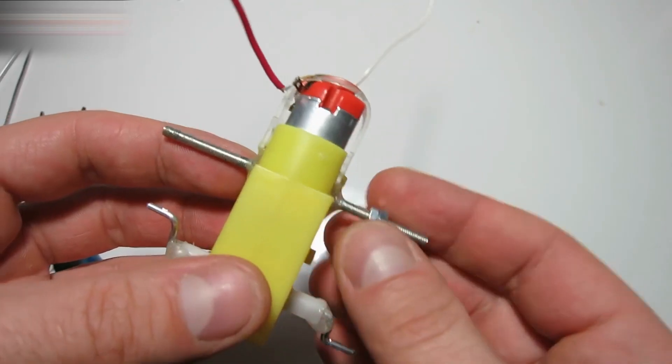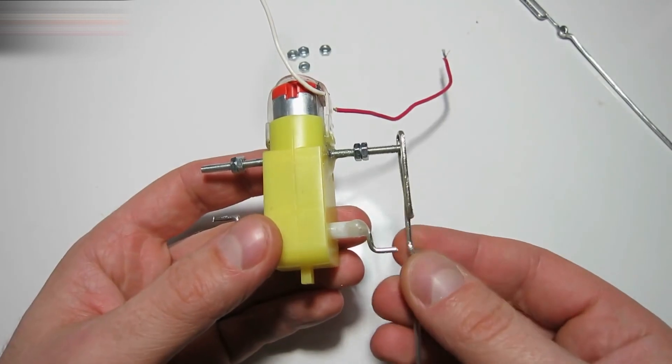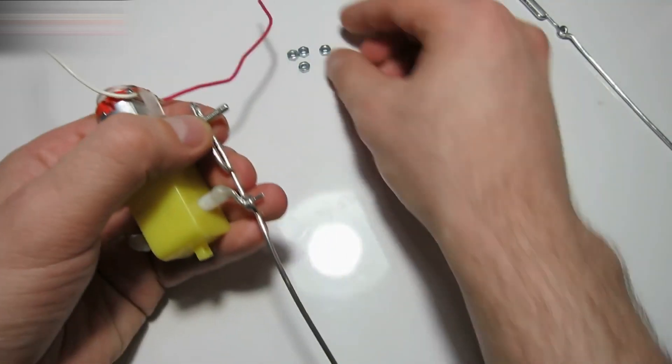Screw two nuts onto the screws. Now, do this: put the wire on like this and then put on two more nuts to secure it.